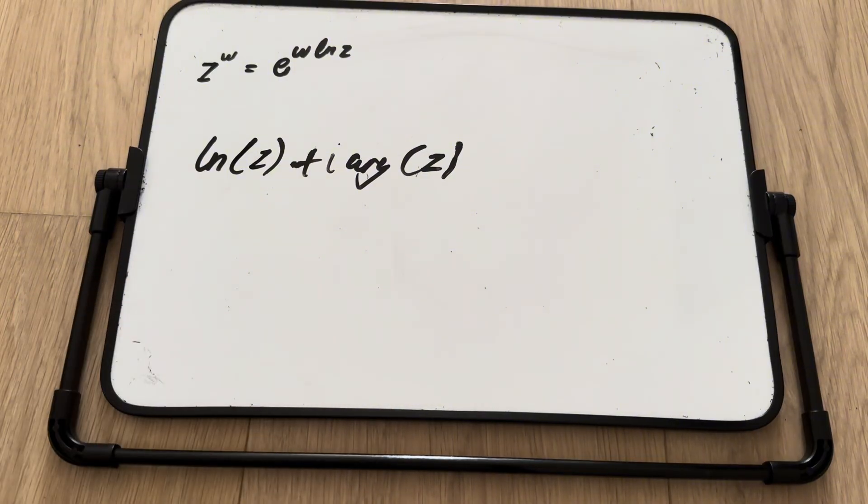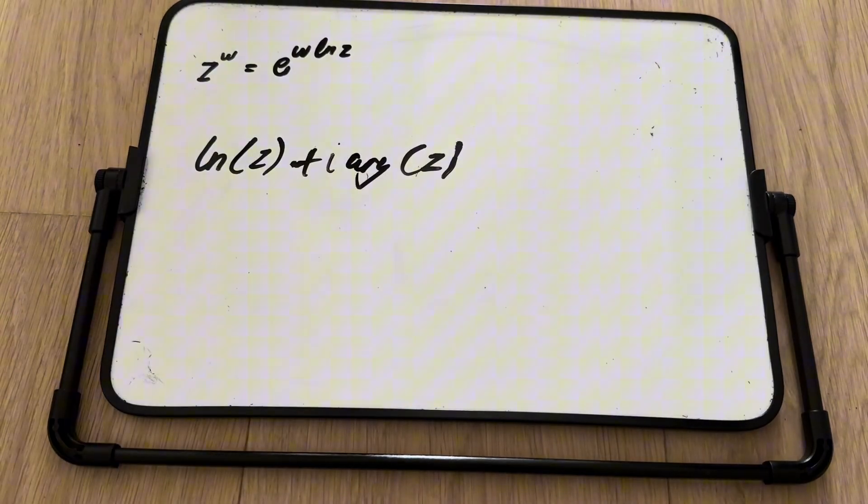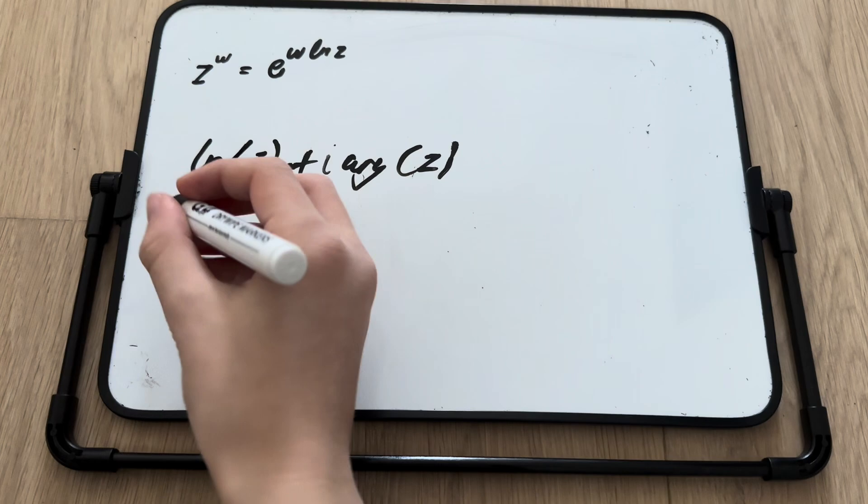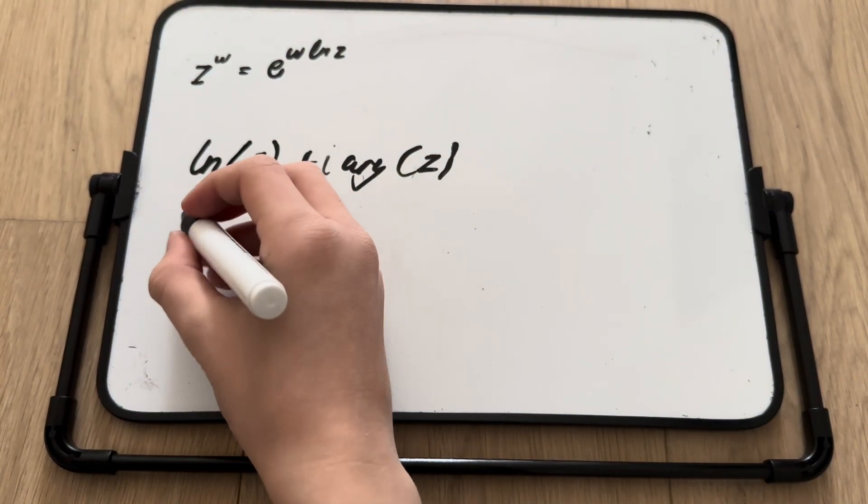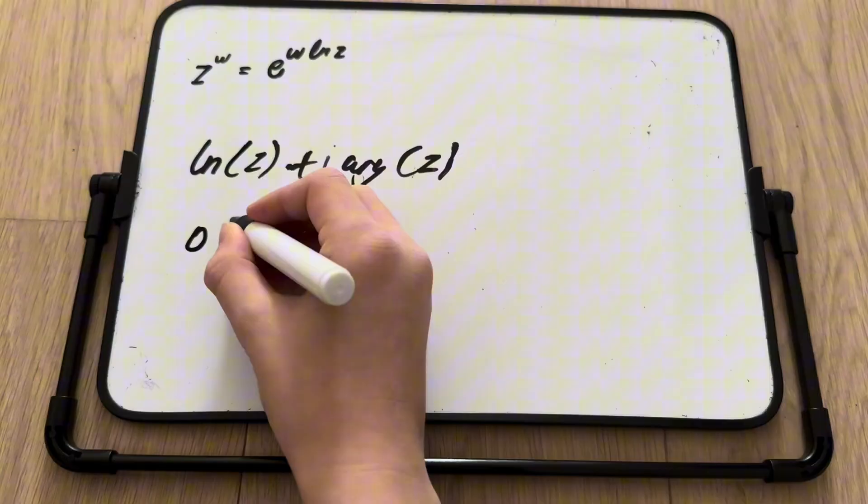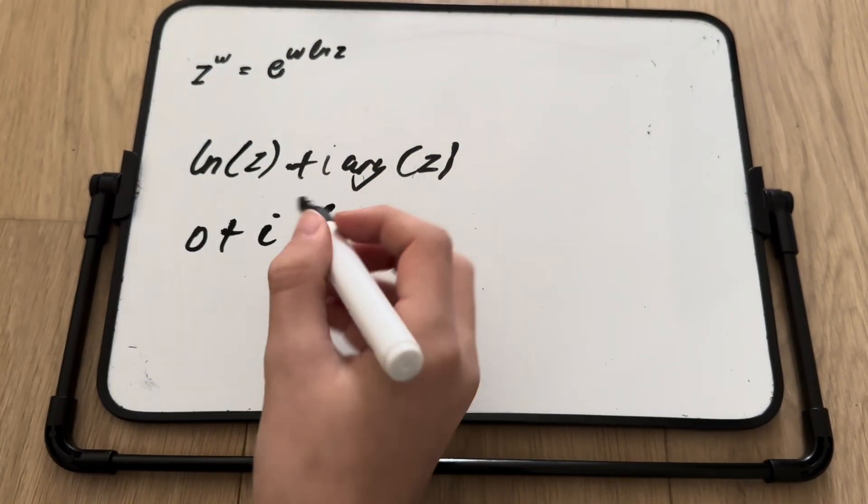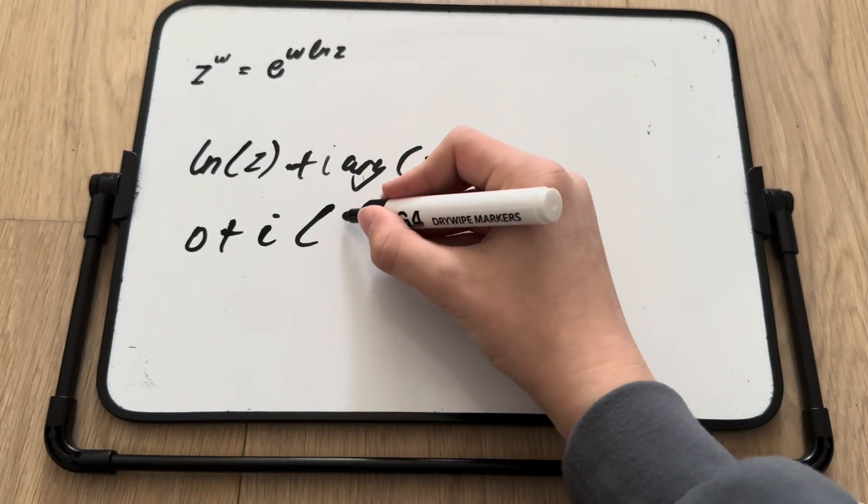Thus, natural logarithm of 1 is just 0 plus i multiplied by the argument of z, which is 90 degrees slash pi over 2.